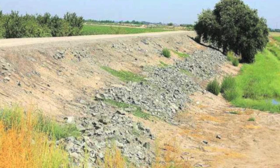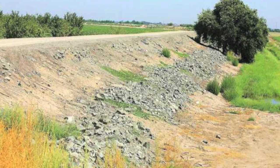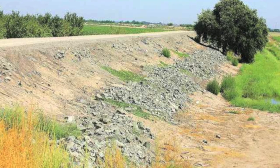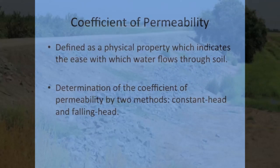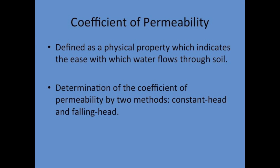The coefficient of permeability is an indicator of how permeable the soil is. It is defined as a physical property which indicates the ease with which water flows through soil. We determine it by two means: the constant head test and the falling head test.